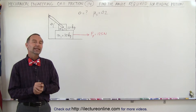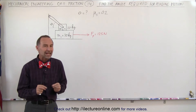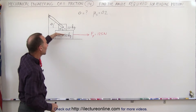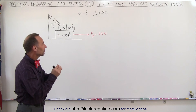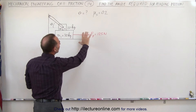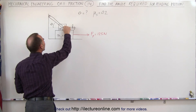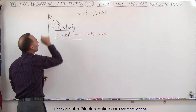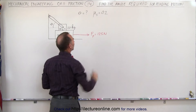Welcome to our lecture online. Here we have an interesting problem where we're trying to find the angle when the force will begin to slide block M1 to the right. We're looking for when a 125 Newton force is just enough to begin to move block M1 — what will be the angle theta between the bracket holding M2 from sliding and the horizontal? The static coefficient of friction is 0.2.